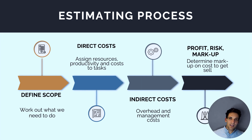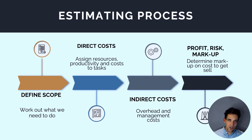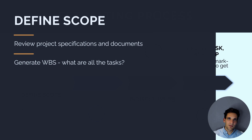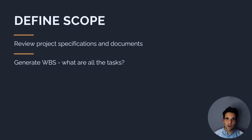Let's now look at the estimating process and step through how ChatGPT can help in each of these defined stages. First is defining scope — we've already looked at how ChatGPT helps us elaborate and define project scope. Next is calculating our direct costs: from the scope, we define the activities we need to complete the project and allocate costs and resources to each. Then we calculate overhead and indirect costs before finally applying our profit and markup. ChatGPT can help by reading and interpreting project documentation, understanding project specifications, and helping us elaborate and define scope by creating a work breakdown structure.